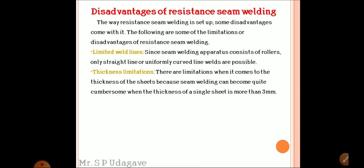There are thickness limitations - seam welding can become quite cumbersome when the thickness of the sheet is more than three millimeters. Applications include air-tight or water-tight vessels, gasoline tanks, automobile mufflers, and various sheet metal containers. The next part is resistance projection welding.